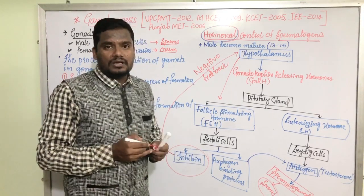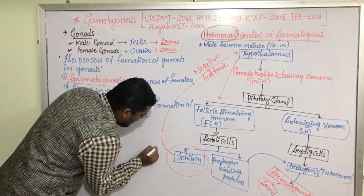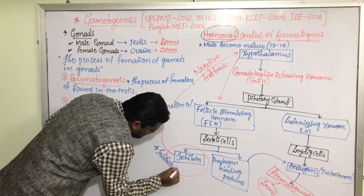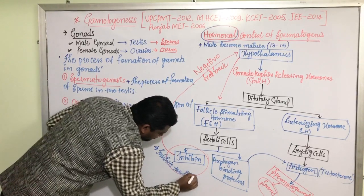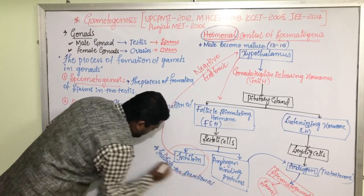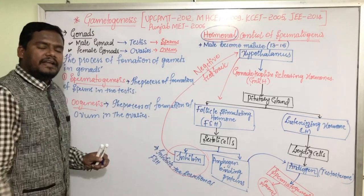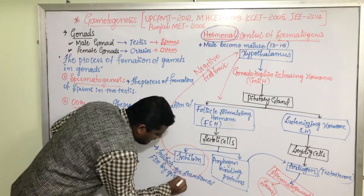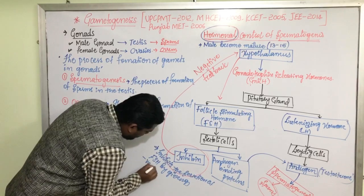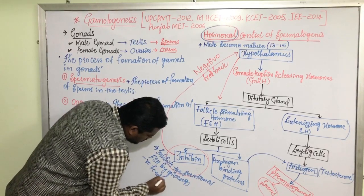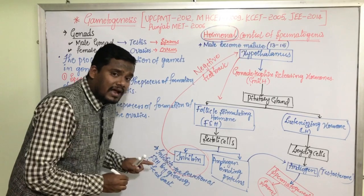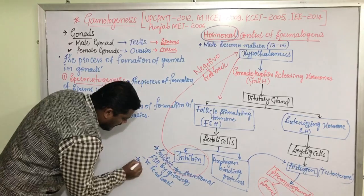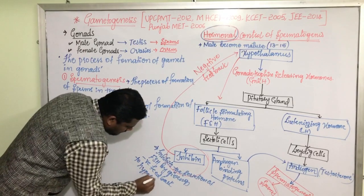The function of inhibin is that it inhibits the secretion of FSH by giving a negative feedback to the hypothalamus. This negative feedback to the hypothalamus regulates and maintains the process — controlling sperm production so it doesn't become excessive.